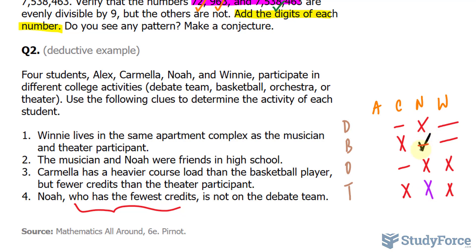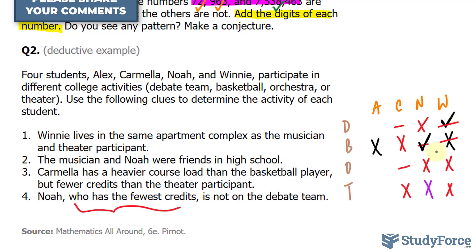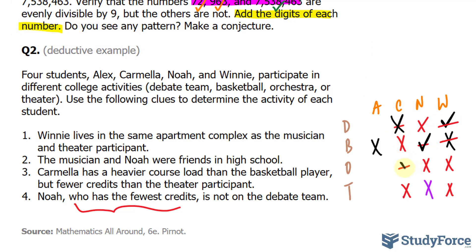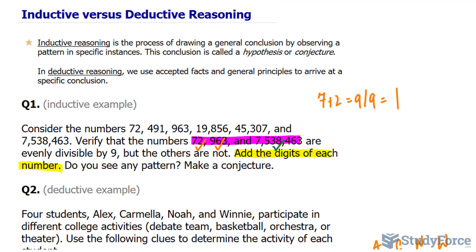This also means that neither Alex nor Winnie are basketball players. So Winnie has to be in the debate club. And if Winnie is in the debate club, Carmela is definitely not in the debate club — she has to be in the orchestra. By deductive reasoning, this leaves Alex in theater. So there you have it: two examples on how to use inductive and deductive reasoning to solve problems.